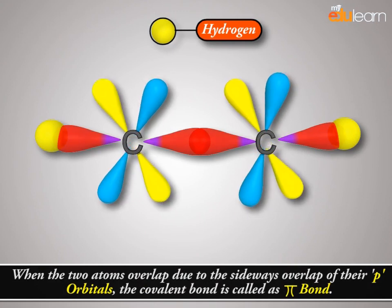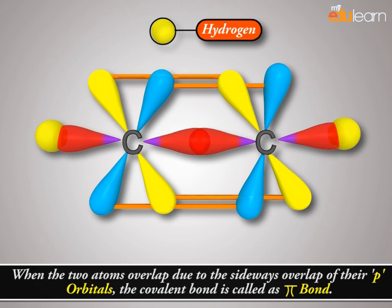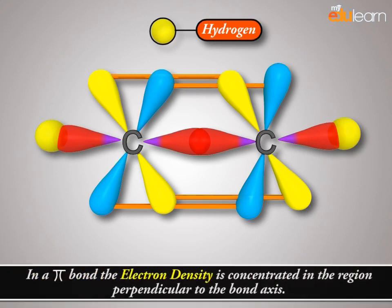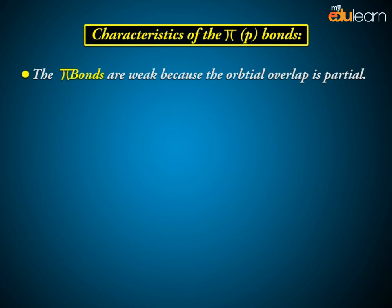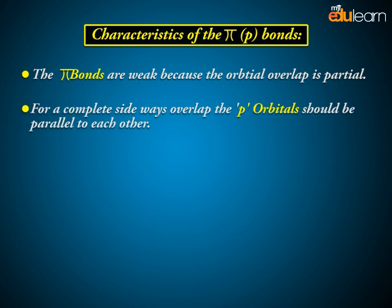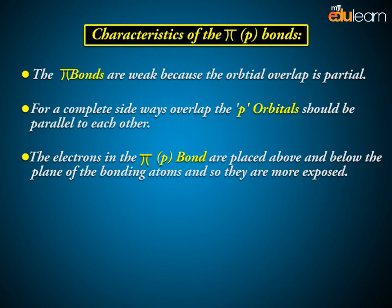When two atoms overlap due to the sideways overlap of their p orbitals, the covalent bond is called a pi bond. In a pi bond, the electron density is concentrated in the region perpendicular to the bond axis. Pi-p bonds are weak because the orbital overlap is partial. For a complete sideways overlap, the p orbitals should be parallel to each other. The electrons in the pi-p bond are placed above and below the plane of the bonding atoms and so they are more exposed.